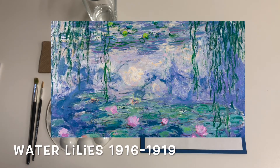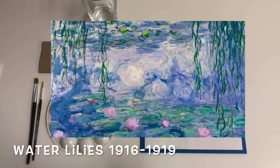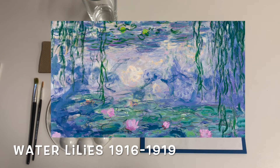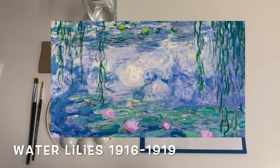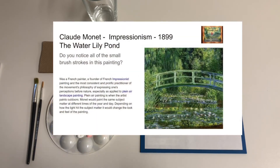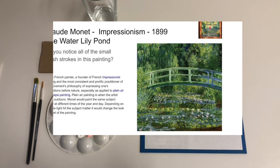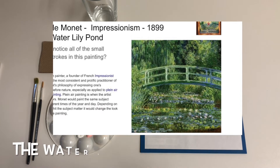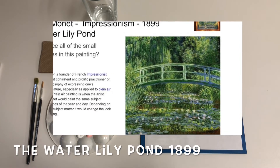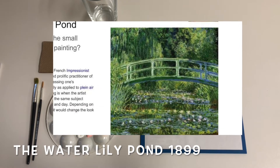Plain air painting is when the artist paints outdoors. Monet would paint the same subject matter at different times of the year and day. Depending on how the light hit the subject matter, it would change the look and feel of the painting.